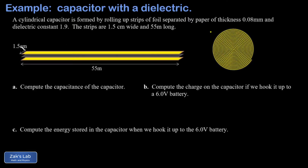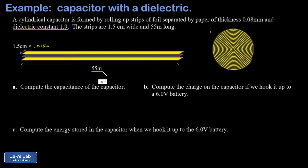Let's check out the numbers. We have a width for these strips of 1.5 centimeters, which is 0.015 meters. We're given that the dielectric constant for this piece of paper is 1.9. The length of the foil strips is 55 meters long.